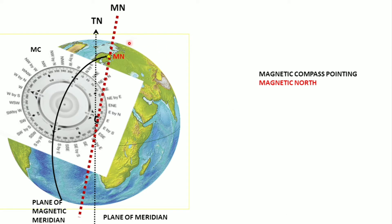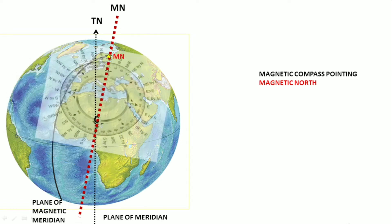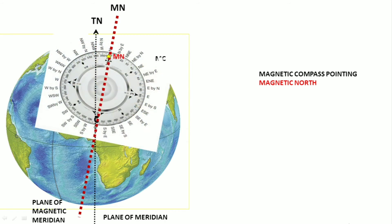And this being a great circle — a semi-great circle — this plane also would be passing through the centre of the earth. I am showing you the plane here. So that means the plane is also pointing towards magnetic north and magnetic south.